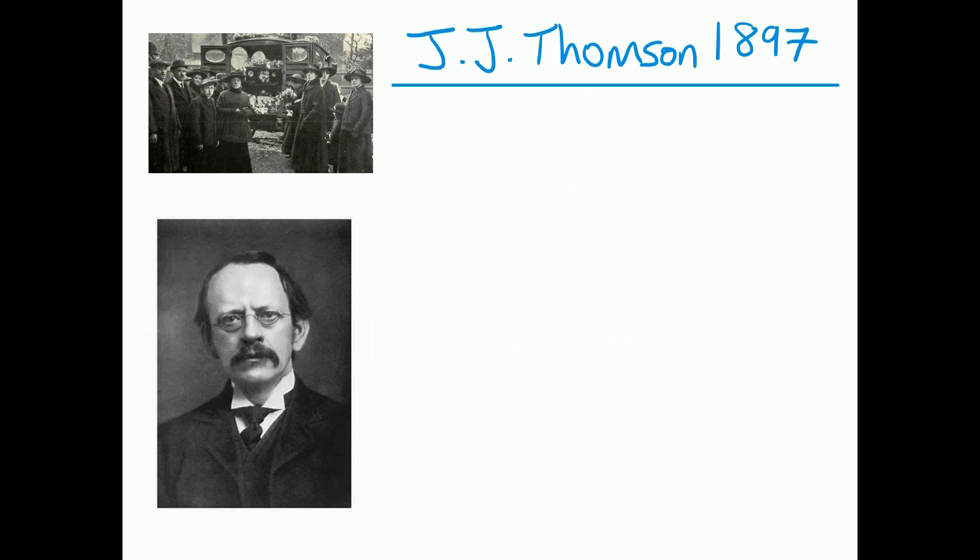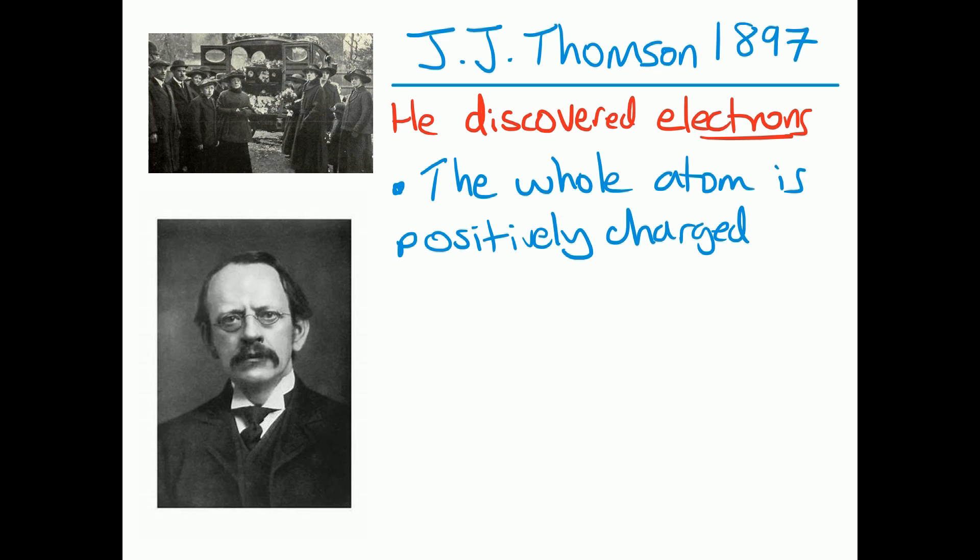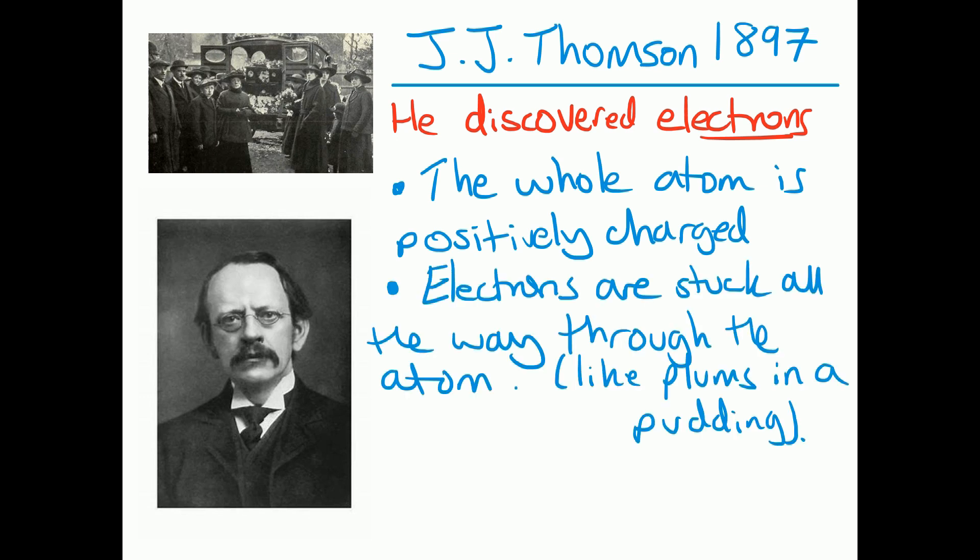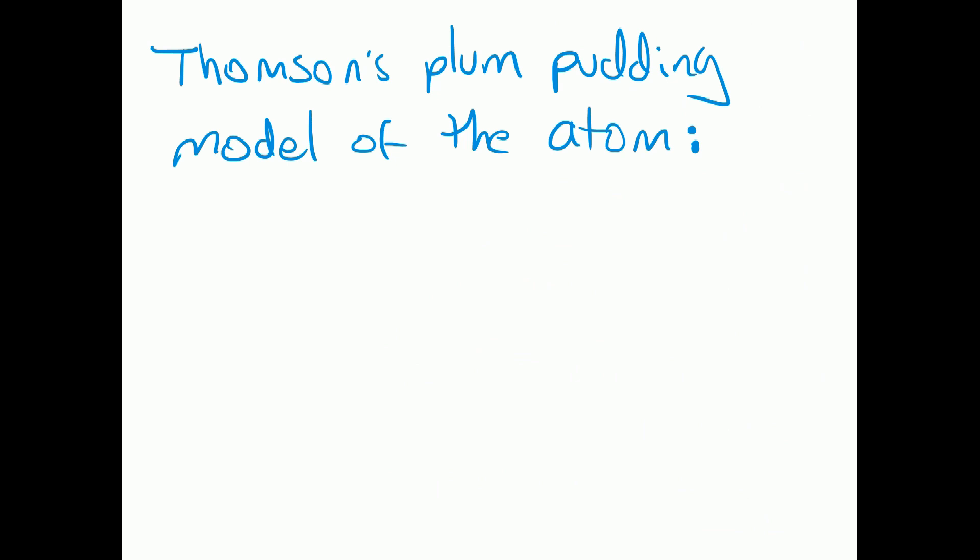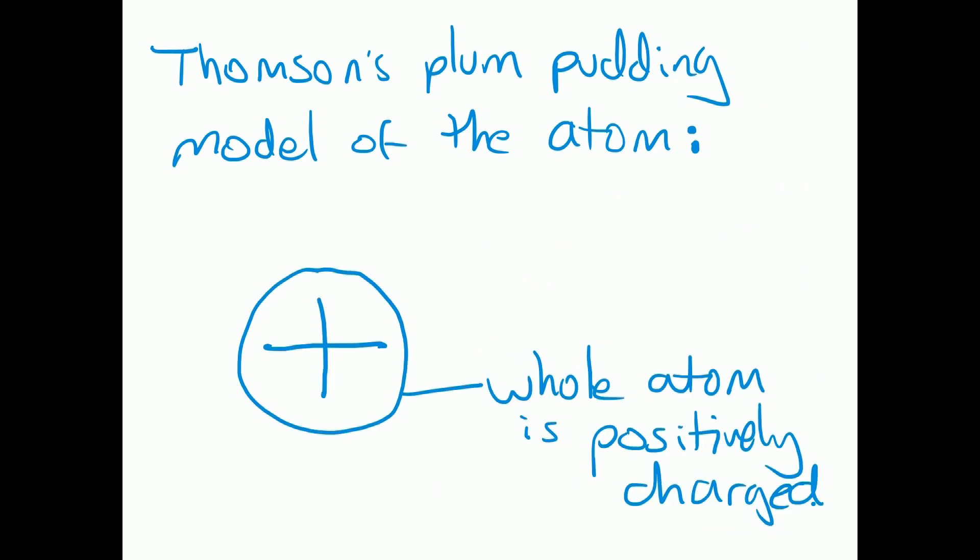In 1897, J.J. Thompson made a big discovery. He discovered electrons, and his idea was that the whole of the atom is positively charged and the electrons are stuck all the way through the atom like plums in a pudding, and there's no empty space in the atom. So Thompson's plum pudding model of the atom would look like this: the whole atom is positively charged and then we've got these electrons embedded or stuck in the atom all the way through. That doesn't look like the atoms we draw these days with the electrons on the outside, but this is the first time we've got electrons being talked about in atoms.